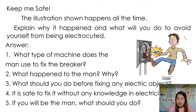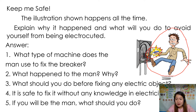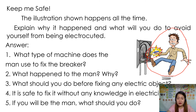Number two: what happened to the man? As you can see, the man was in trouble — he was being electrocuted because he accidentally touched the metal part of the wheel and axle, or the lever. Metal objects can transfer electricity; they are good conductors of electricity, so we have to be careful at all times. Number three: what should you do before fixing any electric objects? You need to turn off the main switch before touching them to avoid accident.